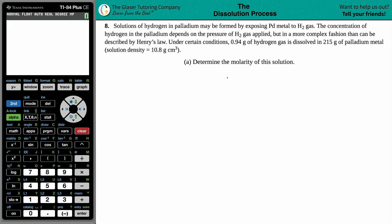Problem 8: Solutions of hydrogen in palladium may be formed by exposing Pd metal to H2 gas. The concentration of hydrogen in the palladium depends on the pressure of H2 gas applied, but in a more complex fashion than can be described by Henry's law. Under certain conditions, 0.94 grams of hydrogen gas is dissolved in 215 grams of palladium metal, with a solution density of 10.8 grams per centimeter cubed. Part A asks us to determine the molarity of this solution.